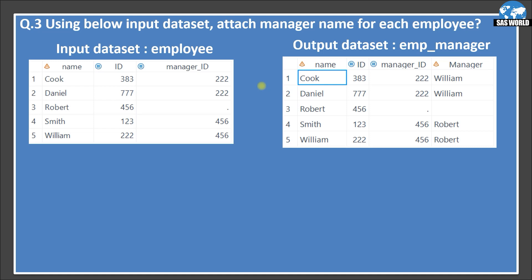This question is one that interviewers have almost always asked me. The question is: using the below input dataset, attach the manager name for each employee. The input dataset has employee name, ID, and manager ID; the output dataset should have name, ID, manager ID, and manager name. This should be solved using a self-join. For example, for the person Cook, ID is 383 and manager ID is 222 — looking up ID 222, that belongs to William, so William is the manager of Cook.